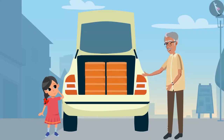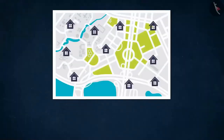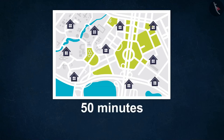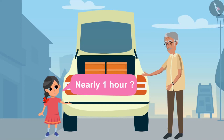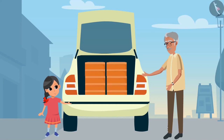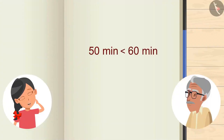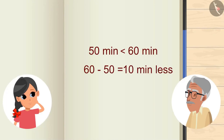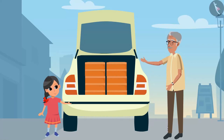Besides this, driving from one house to another will also take time. It will hardly take 50 minutes — nearly 1 hour. If there are 60 minutes in an hour, then 50 minutes is how much more or less than it? 50 minutes is less than 60 minutes. On subtracting 50 from 60, we get 10. So it is 10 minutes less than 60. Now a difficult question — can you add 50 minutes to the previous 1 hour 40 minutes?